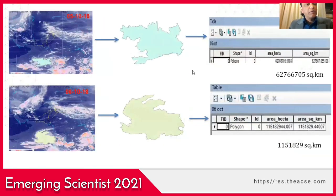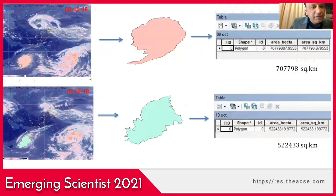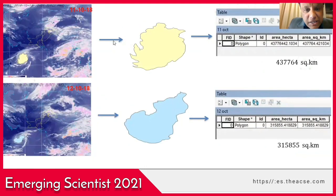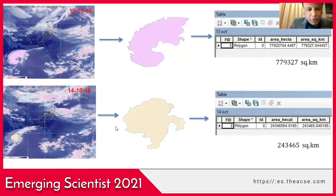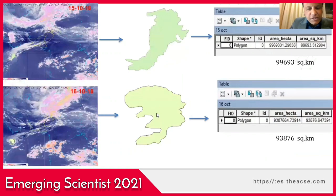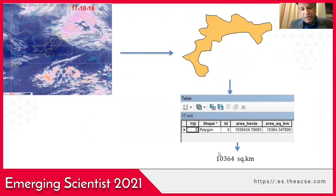Likewise, we performed the same process for the dates 5th, 6th, 7th, 8th, 9th, 10th, 11th, and 12th October. These are the shape files of the tropical cyclone and the calculated aerial extent in square kilometers for each date, continuing through 13th, 14th, 15th, 16th, and finally 17th October 2018. By 17th October, the aerial extent of the tropical cyclone had dissipated to just 10,364 square kilometers.